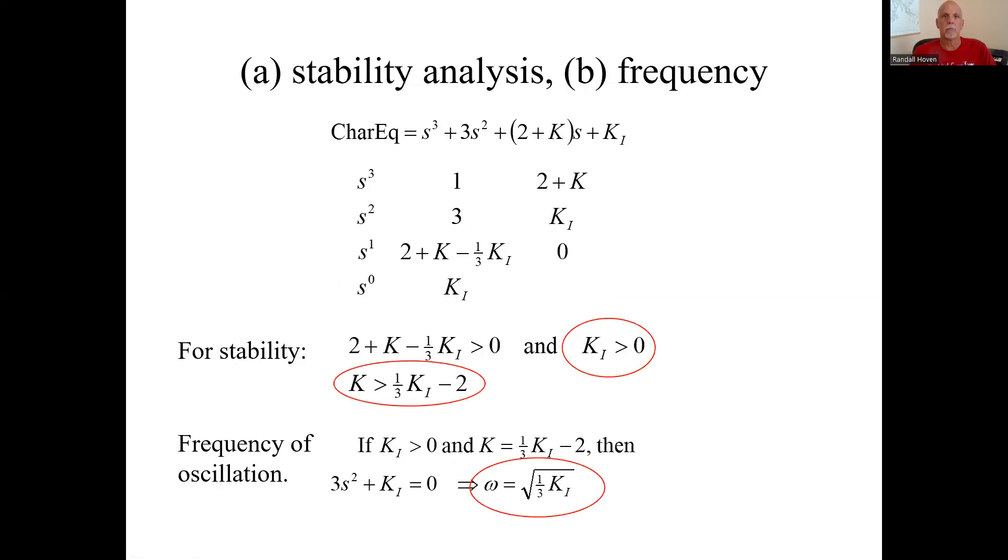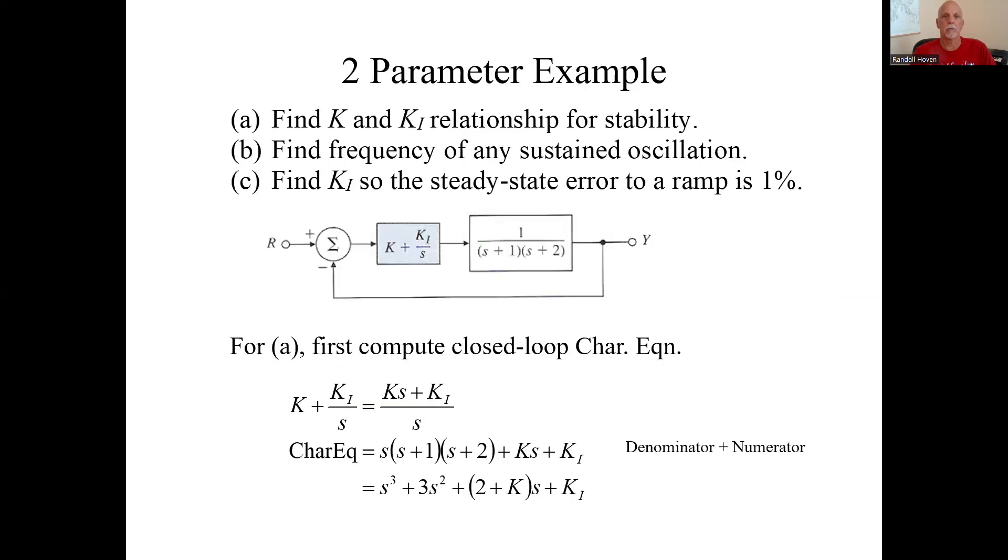One more. Here's the system. Do three different things. Find a relationship for K and K_I for stability. Do the sustained oscillation analysis. And also find K_I so the steady state error to a ramp is one percent. Again, we're not given the closed loop characteristic equation. What it's going to be. The closed loop characteristic equation is going to be the product of the denominators plus the product of the numerators. Here's what this guy is. So its denominator is just S. Its numerator is this. Product of the denominators is then S times S plus one S plus two. And the product of the numerators is K S plus K_I times one. It all equals this.